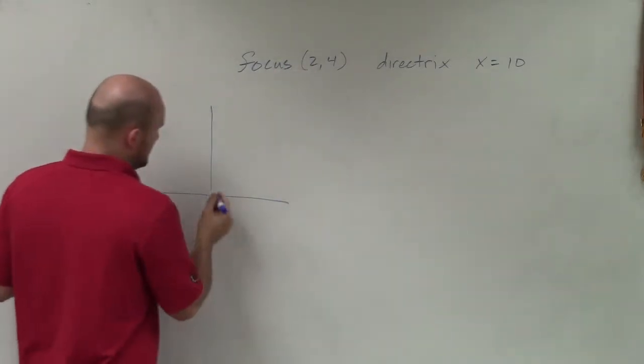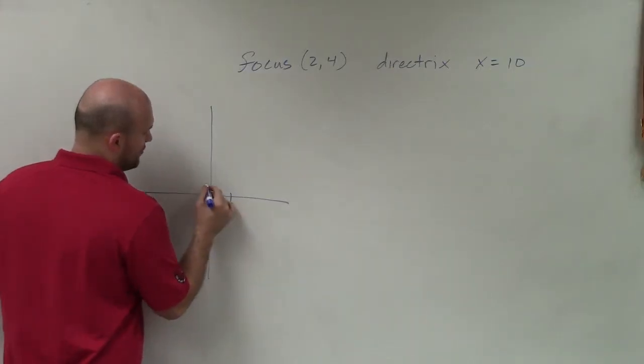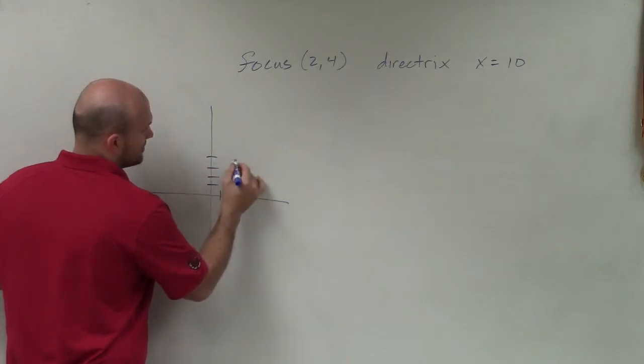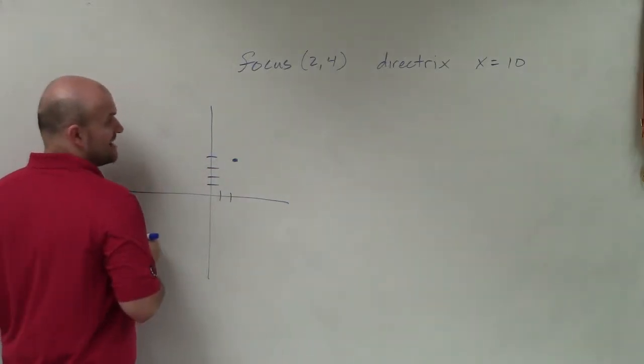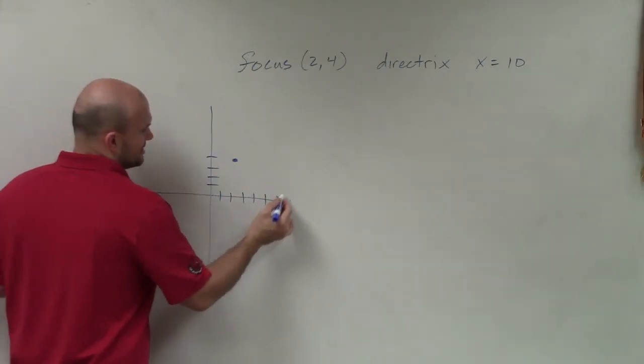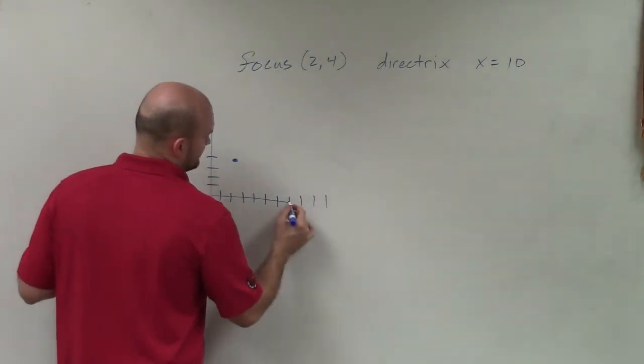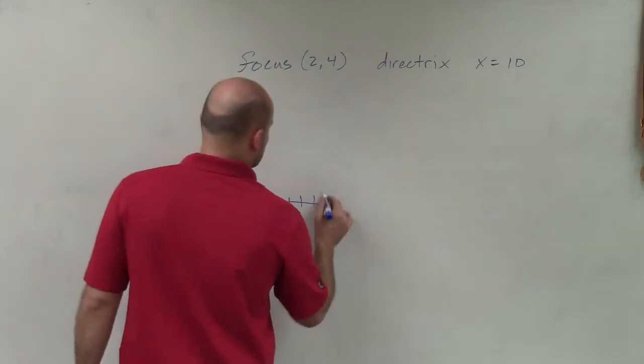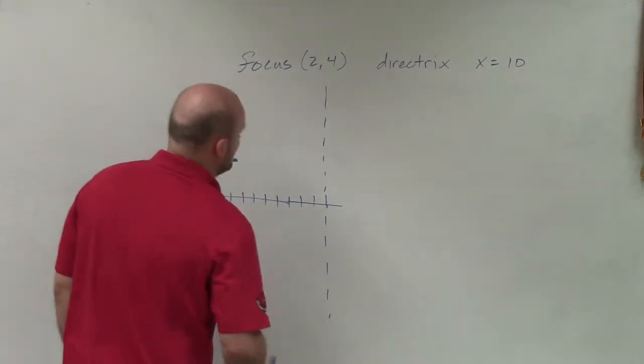So the first thing I'm going to do is I'm going to plot the focus, which is (1, 2) up 4, so that's 1, 2, 3, 4. And then I see my directrix is at x = 10. So that's going to be 1, 2, 3, 4, 5, 6, 7, 8, 9, 10. And I'm just going to draw a nice dotted line here.